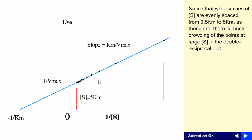Here we have some important things to notice. When the values of S are evenly spaced from 0.5 Km to 5 Km, there is much crowding of the points at large values.